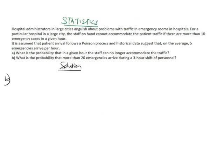Moving to Part B: we need to find the probability that more than 20 emergencies arrive during a three-hour shift of personnel. From the question, on average five emergencies arrive per hour, so lambda remains 5. But here t is equal to 3. Therefore, the Poisson parameter mu equals lambda times t, which is 5 times 3, equal to 15.